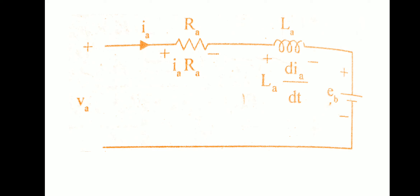When the armature voltage is varied, the armature current flows across the resistor Ra, and La is the armature inductance. Eb is the back EMF. Whenever current flows across a coil placed in a magnetic field, due to the cutting of the magnetic flux, this back EMF is generated.